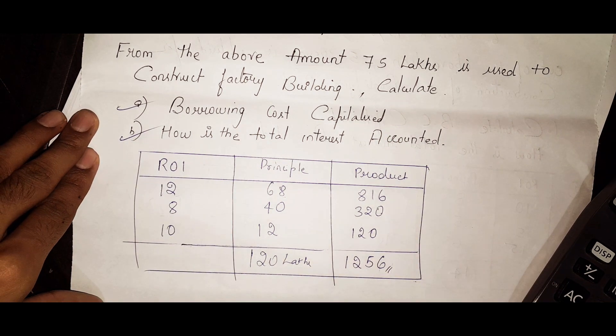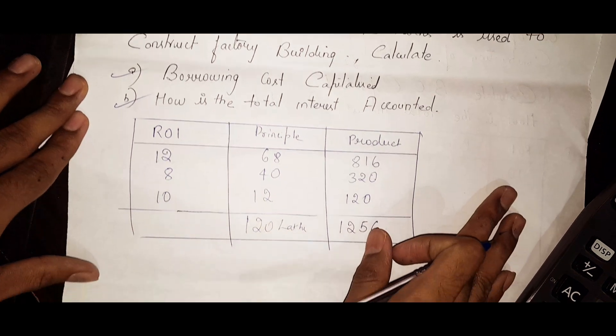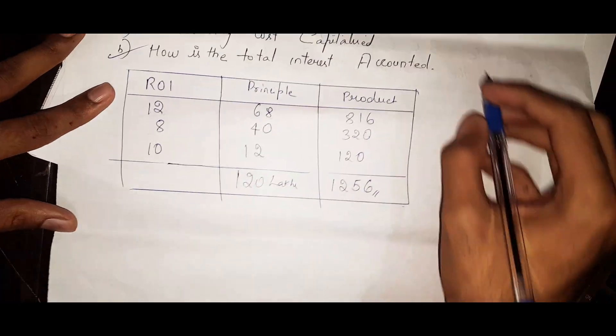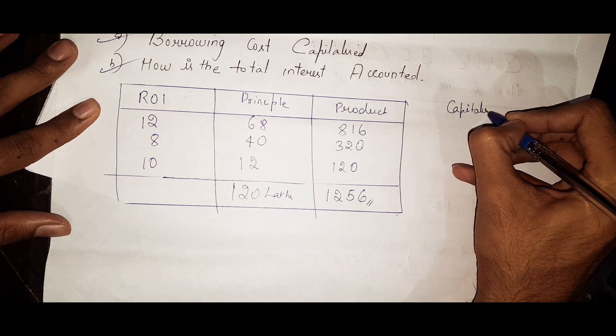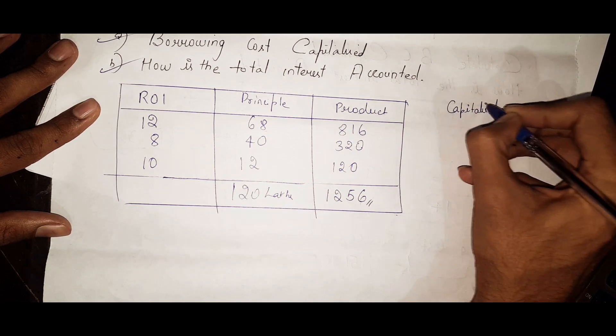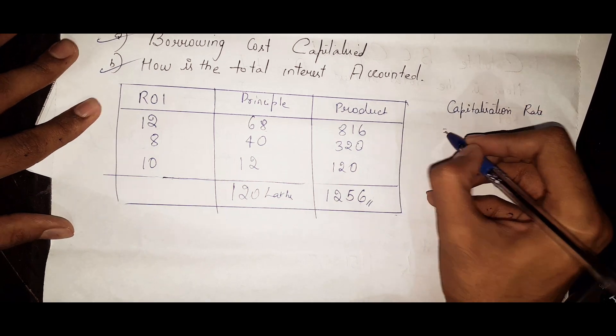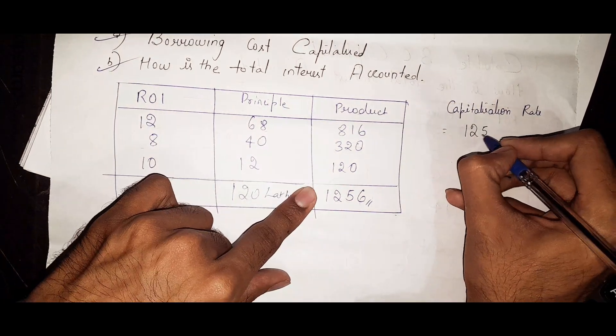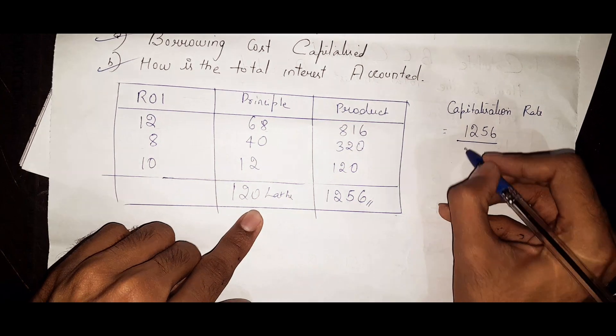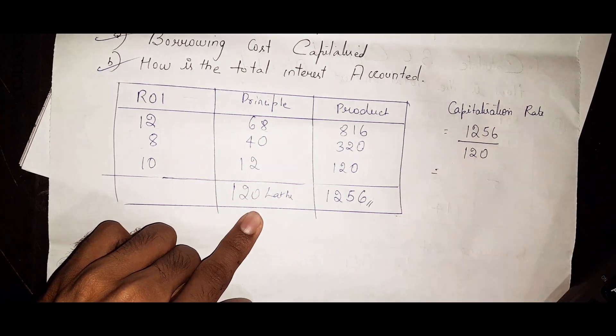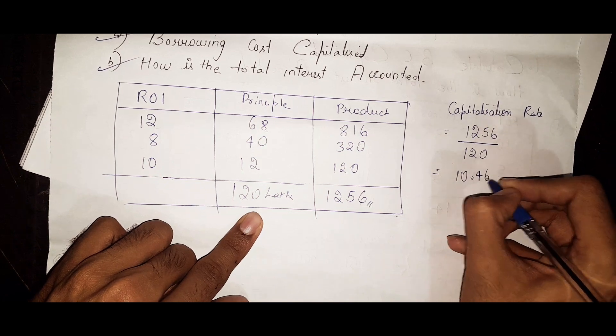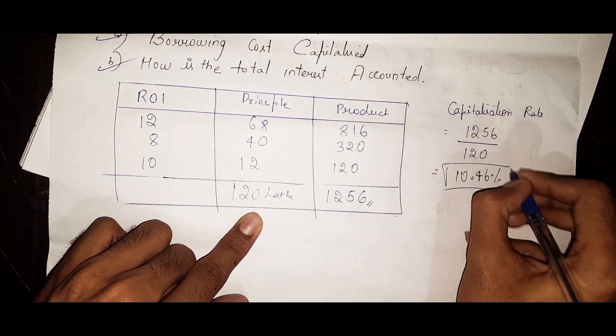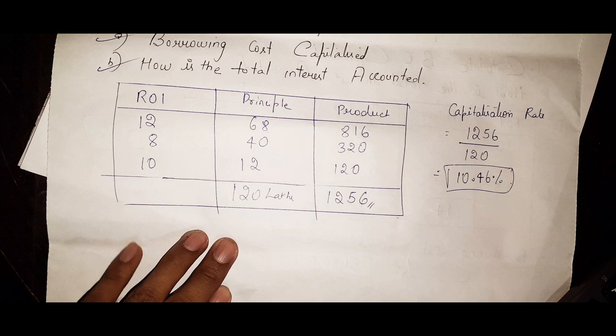Now we need to find out the capitalization rate. It is nothing but total product, so 1256 divided by principal. When you do it, you will get the capitalization rate, that is 10.46 percentage.